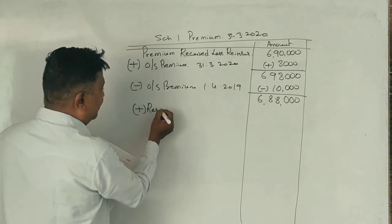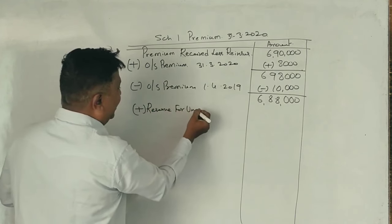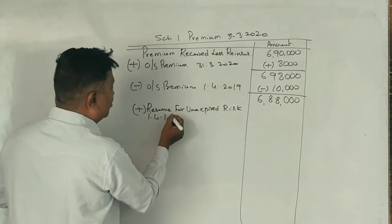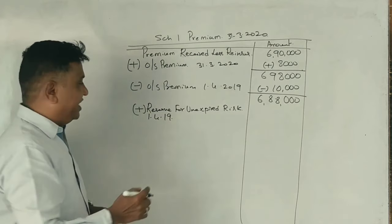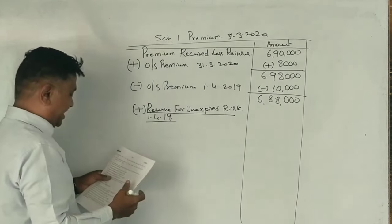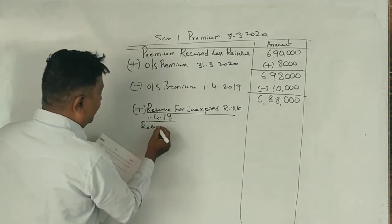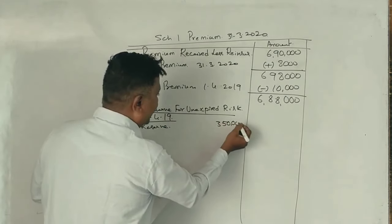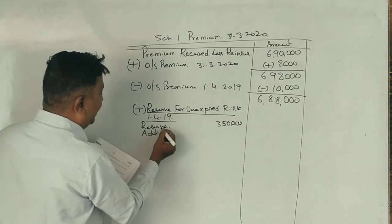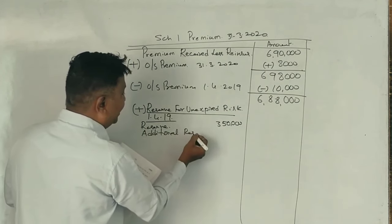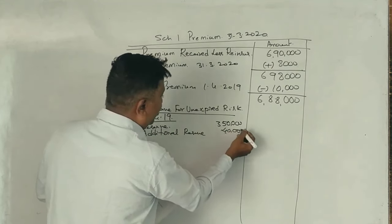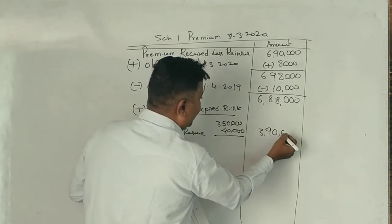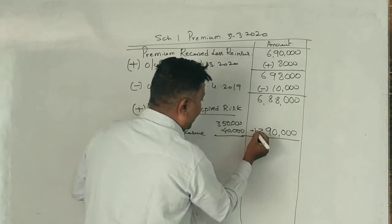Reserve for unexpired risk, opening date 1st April 2019: 3,50,000. Correct. Additional reserve, opening date 1st April 2019: 40,000. Add money: 3,50,000 plus 40,000 equals 3,90,000.